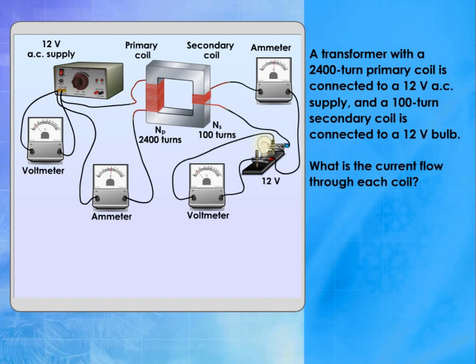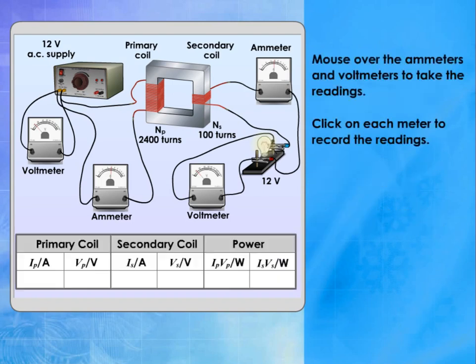What is the current flow through each coil? What is the potential difference across each coil? Mouse over the ammeters and voltmeters to take the readings. Click on each meter to record the readings.